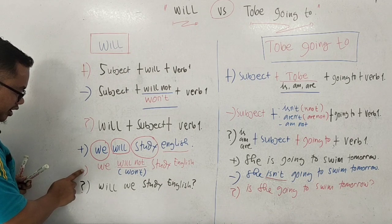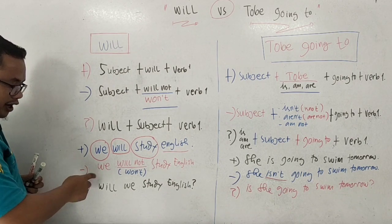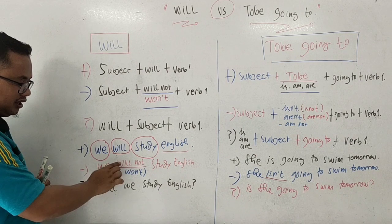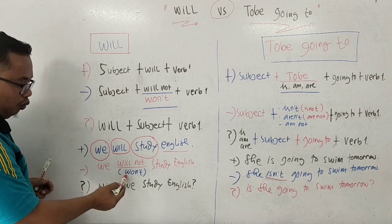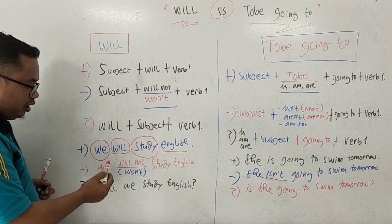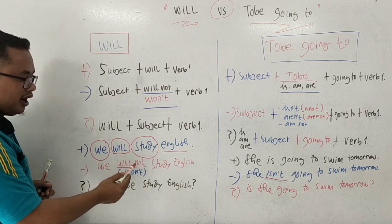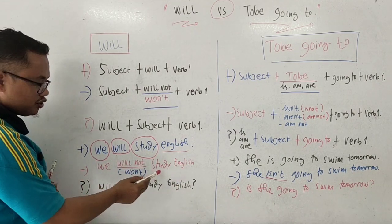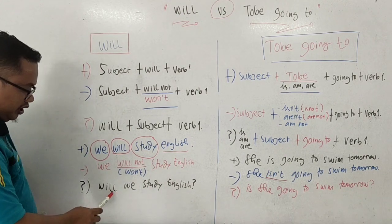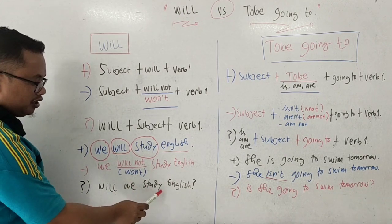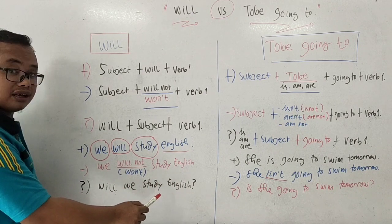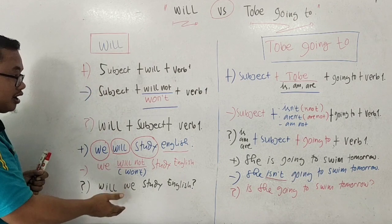For the negative form: Subject + will not + verb 1. 'Will not' can be shortened to 'won't.' Example: 'We will not study English' — we won't study English. For the interrogative form: Will + subject + verb 1? Example: 'Will we study English?' — meaning 'Akankah kita belajar bahasa Inggris?' So this is the formula and example of 'will.'